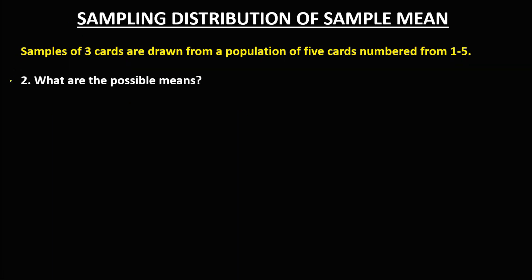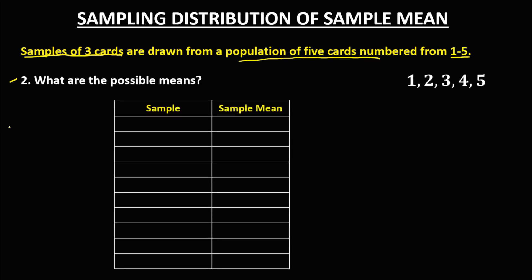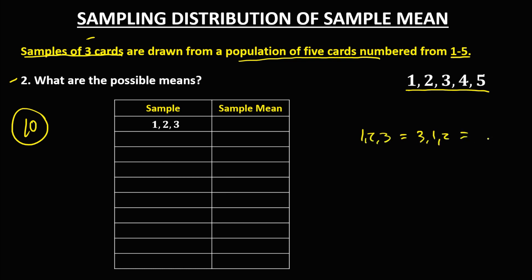To solve for the possible means from a population of 5 cards numbered 1 to 5 with samples of 3 cards, we need to list all the samples. Since we have 10 possible outcomes, we have 10 possible samples. From cards numbered 1 to 5, picking 3 cards, we can have: 1, 2, 3 — then 1, 2, 4 — then 1, 2, 5 — then 1, 3, 4 — then 1, 3, 5 — and 1, 4, 5.